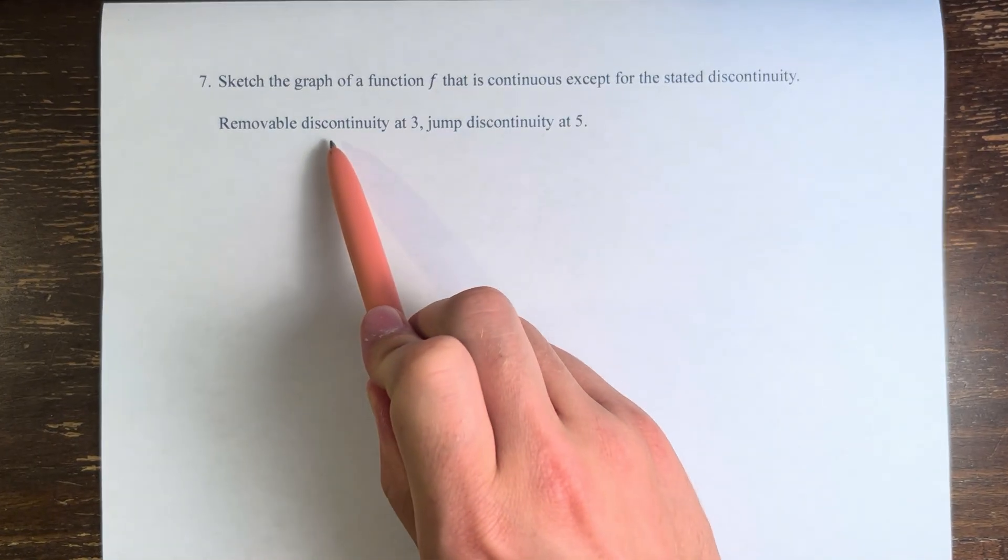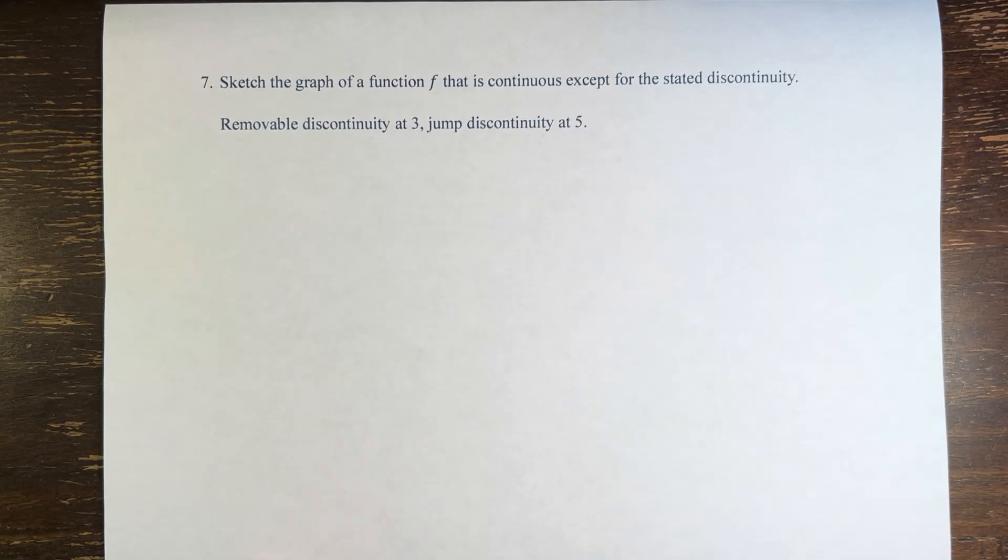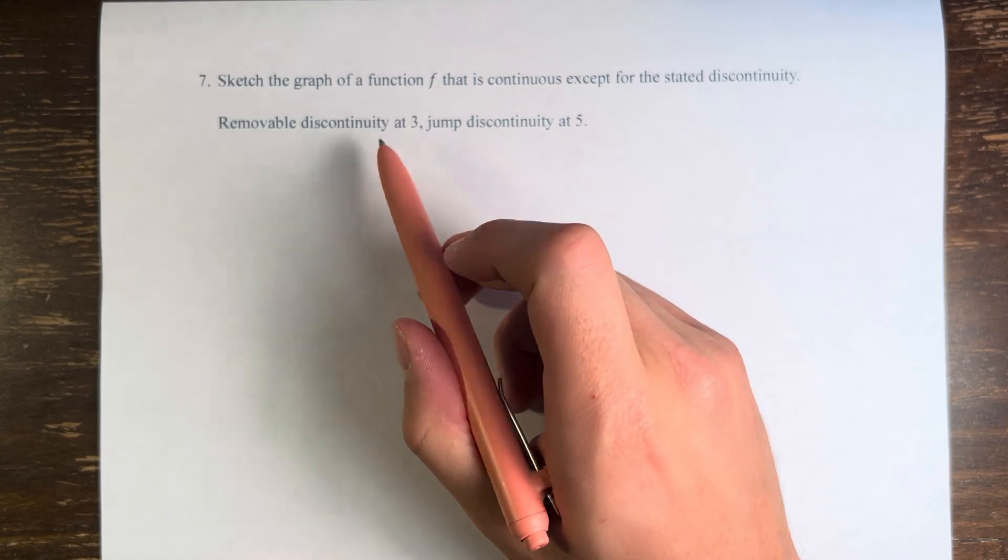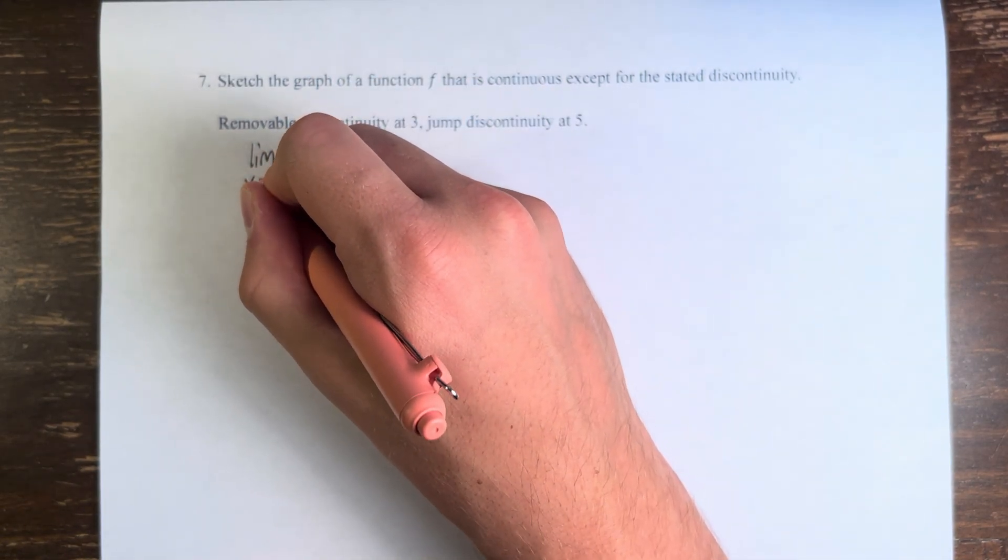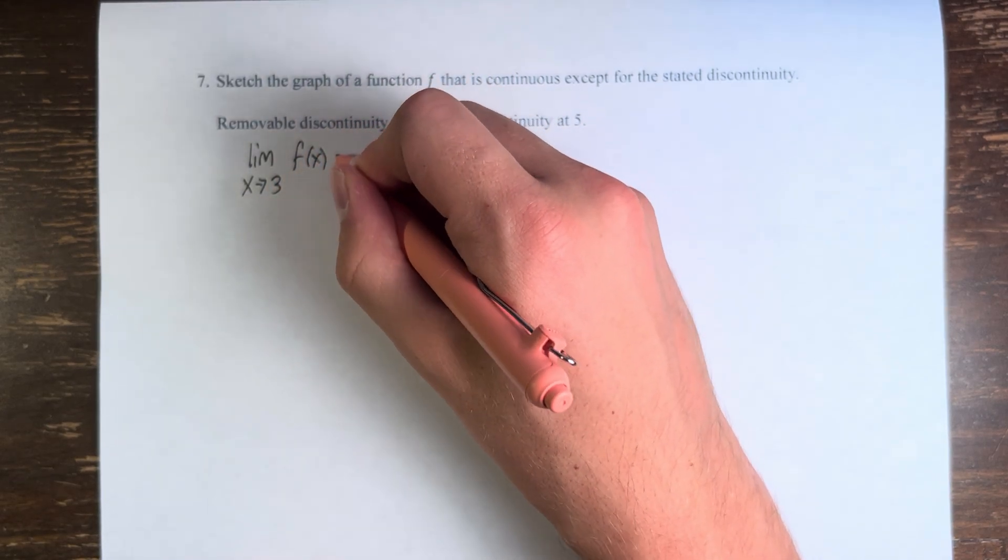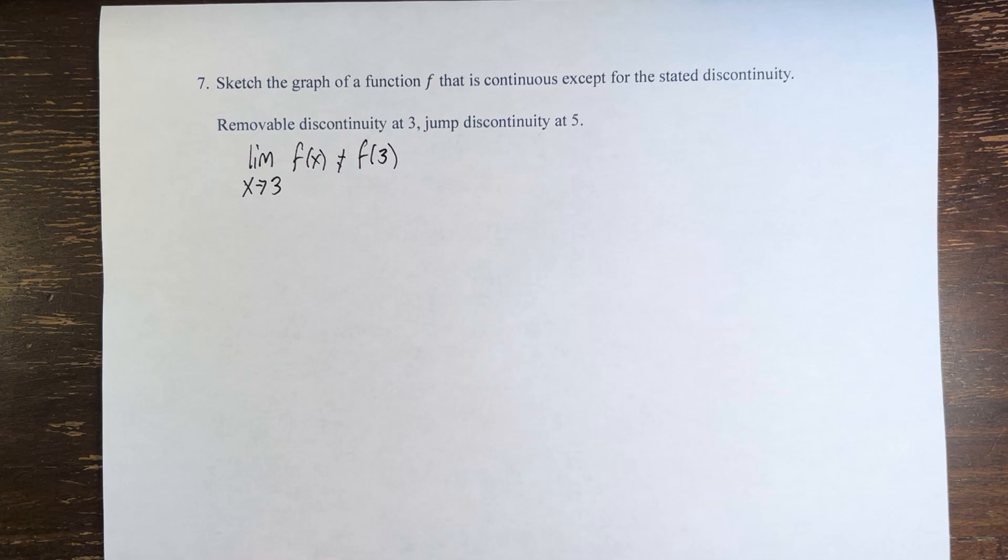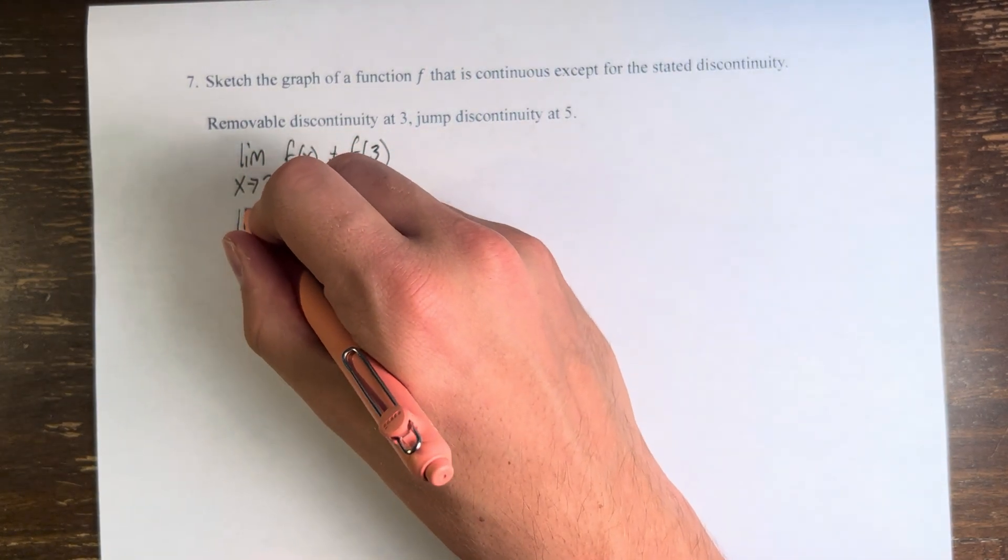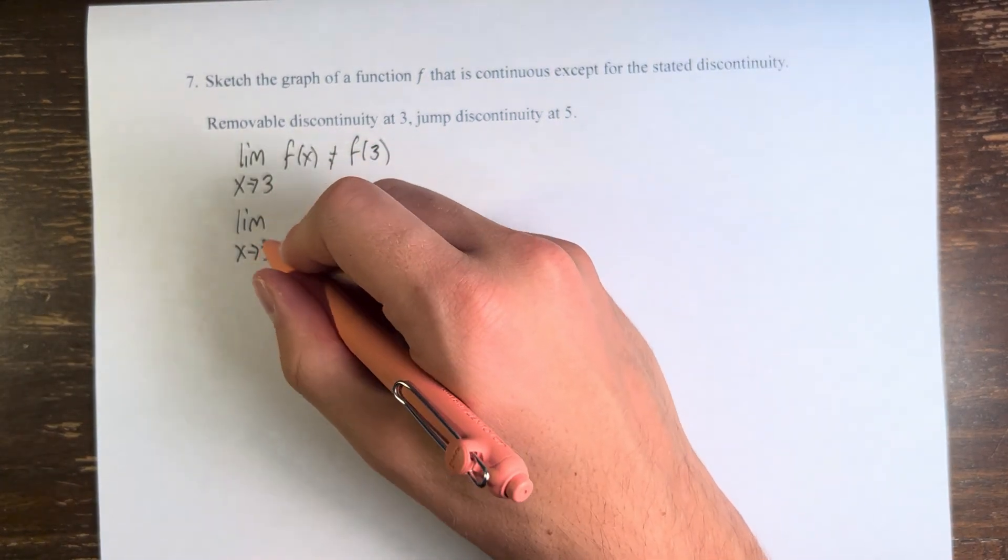So we have a removable discontinuity at 3 and a jump discontinuity at 5. What this means is that at 3, the limit as x approaches 3 of f of x does not equal f of 3. It's discontinuous. However, that does not mean that the limit as x approaches 3 does not exist. The limit exists.